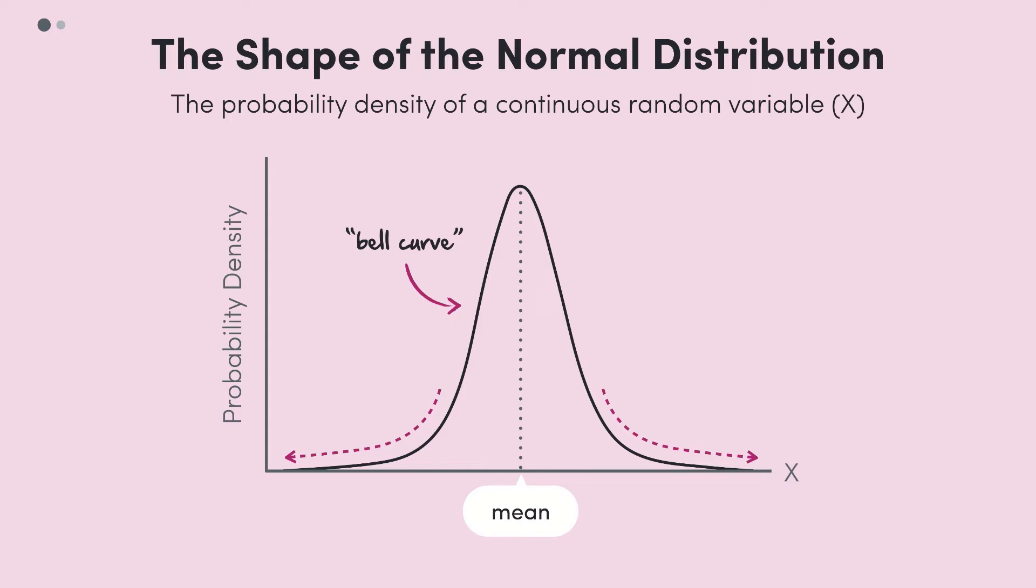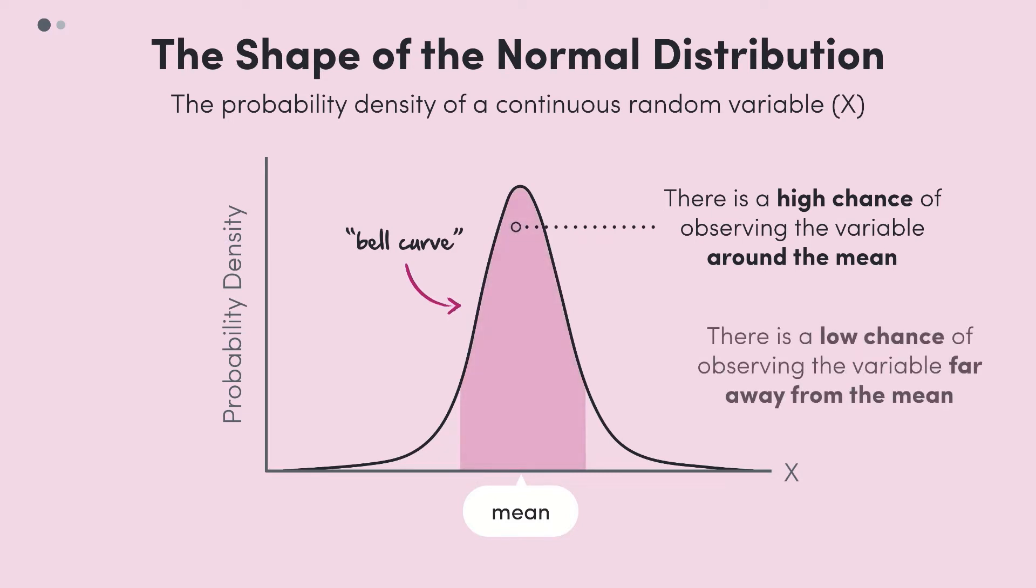What does this tell us in real terms? We have a good chance of observing the variable around the mean, but we have a much smaller chance of observing the variable a long way below or above the mean.